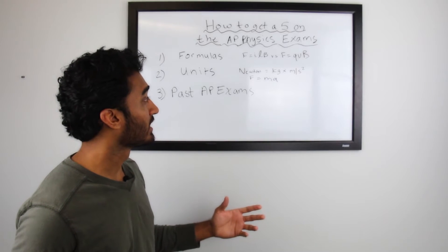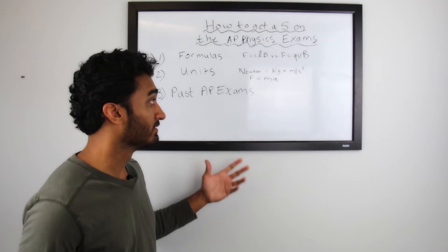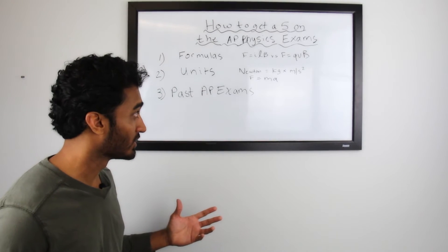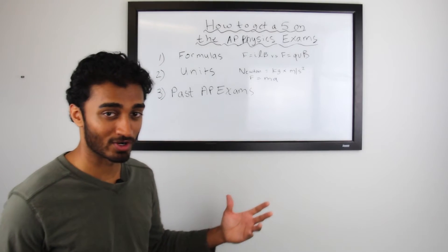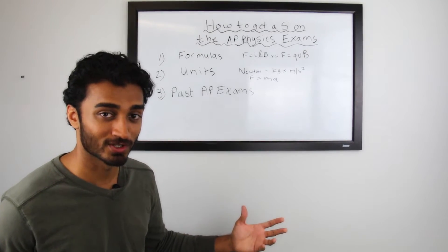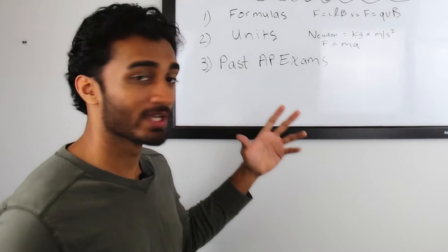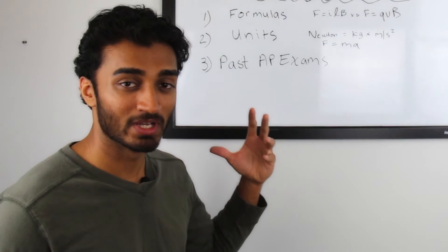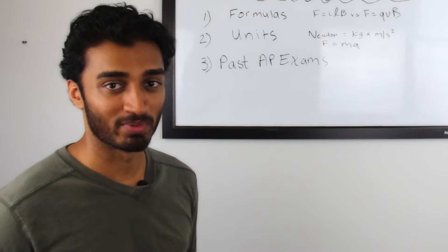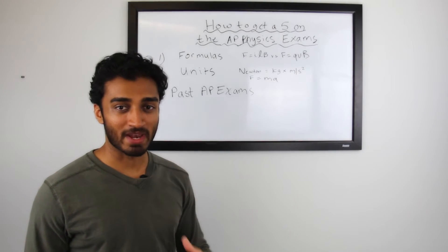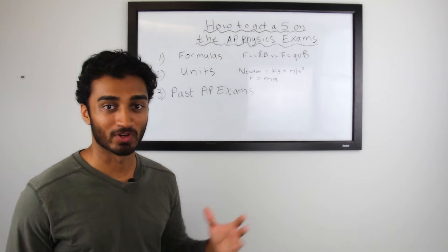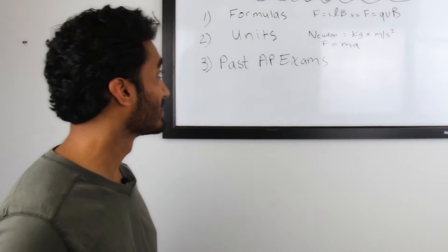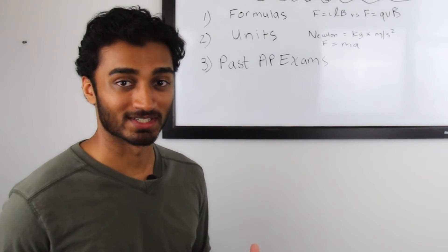Whereas the second equation has Q, which is a charge, V for velocity, and B for magnetic field strength. In that situation, you have a velocity and a charge, so you know that's the magnetic force of a moving charge. Going through all the equations, comparing and contrasting them, and seeing the relationships between them is going to give you a better idea of how to approach the problem. Every problem only has certain variations of equations being used, so by being very comfortable with these formulas, you'll do really well and get a five on the AP Physics exam.